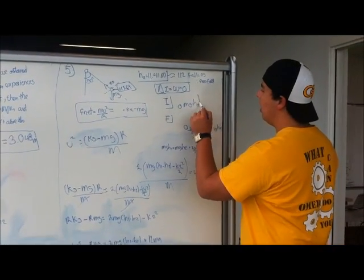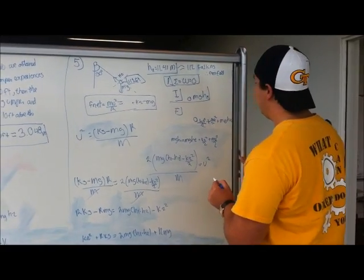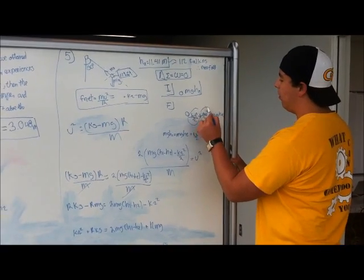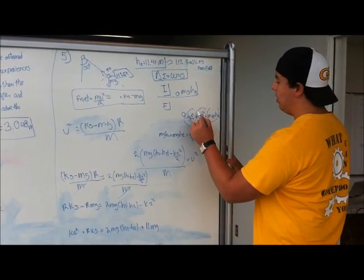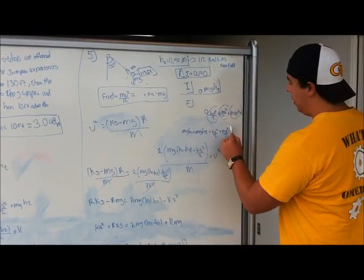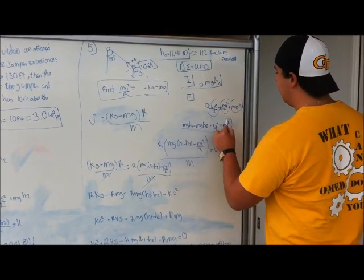The initial state is going to have only potential energy. And the final state is going to have a potential of spring, a potential of height, and kinetic energy. So we now have this equation. Let's name it number one.